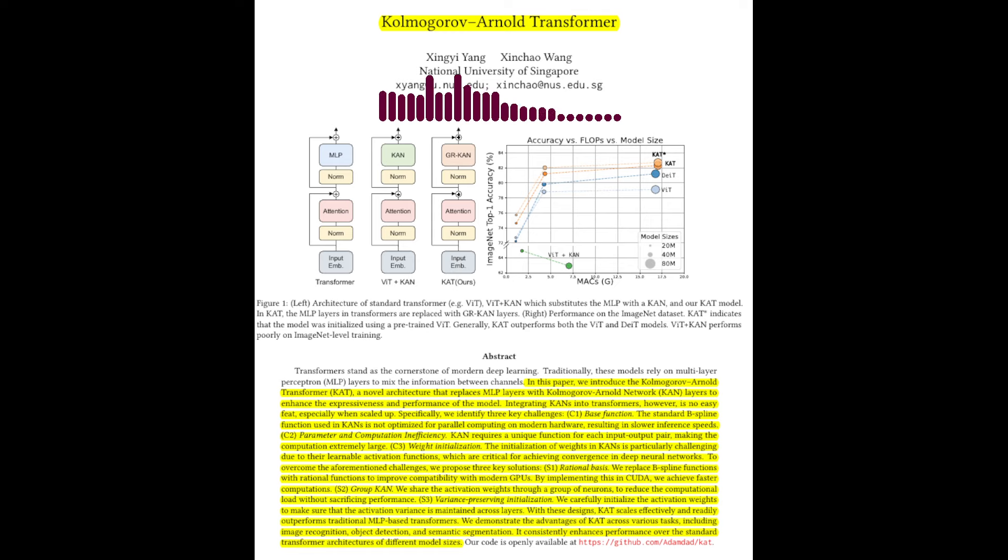What are the key findings from these studies? The ablation studies show that the proposed GR CAN architecture with rational functions and group-based parameter sharing significantly outperforms traditional activation functions like ReLU and GELU. They also demonstrate the importance of variance-preserving initialization for achieving stable training and improved performance.